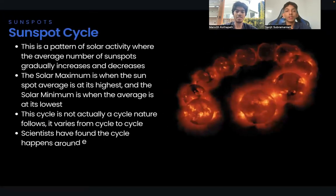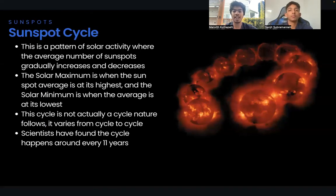Now let's talk about the sunspot cycle. The sunspot cycle is a pattern of solar activity where the average number of sunspots gradually increases or decreases. Solar maximum is the time in the cycle where we see the most sunspots, and the solar minimum is the time when we see the fewest sunspots. The sunspot cycle is not absolute, it varies from cycle to cycle. However, by tracking data over time, scientists have found that the average sunspot cycle lasts around about 11 years.